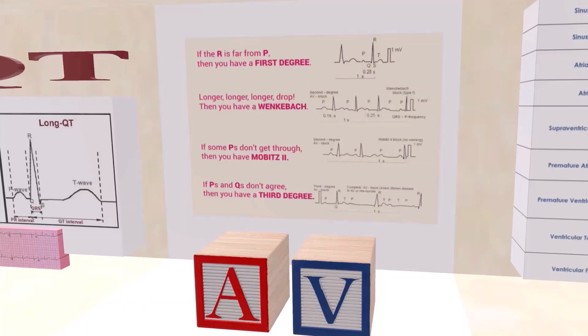Mobitz type 2 requires a pacemaker. 'If some P's don't get through, you have a Mobitz type 2' — meaning dropped beats not preceded by any change in the PR interval. Mobitz type 2 may progress to a third degree block since it usually indicates structural abnormality such as ischemia, fibrosis, or sclerosis. Finally, 'if P's and Q's don't agree, then you have a third degree' — the P waves and QRS complexes are rhythmically dissociated; the atria and ventricles beat independently, requiring a pacemaker.